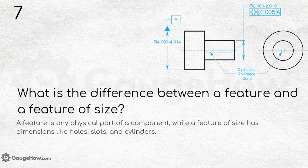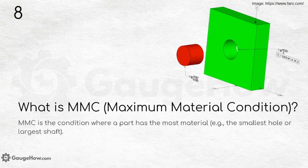What is the difference between a feature and a feature of size? A feature is any physical part of a component, while a feature of size has dimensions, like holes, slots, and cylinders. What is MMC — Maximum Material Condition? MMC is the condition where a part has the most material; for example, the smallest hole or the largest shaft.